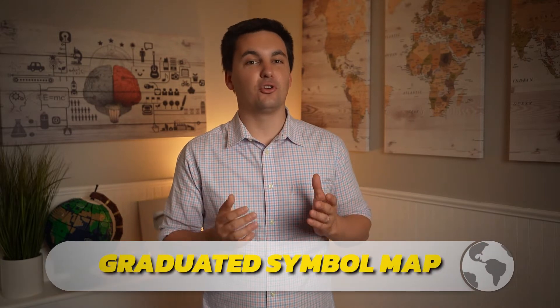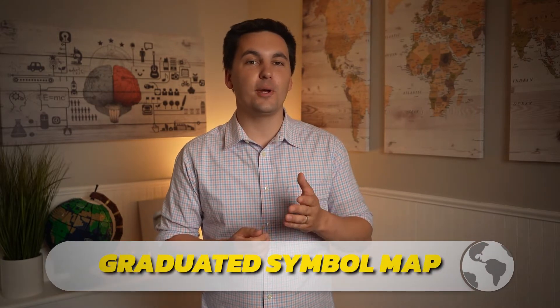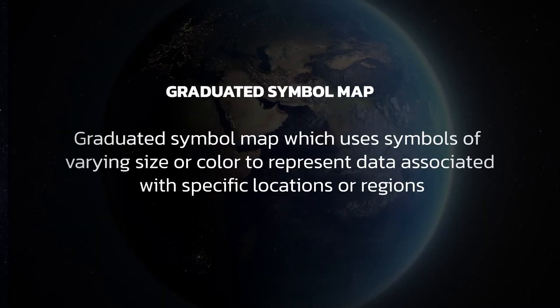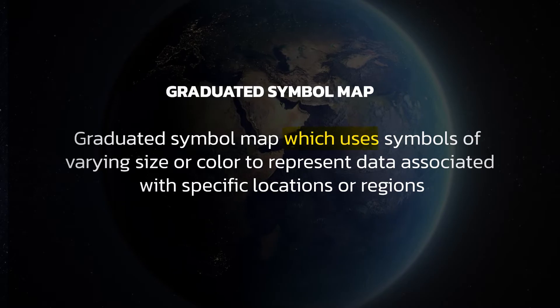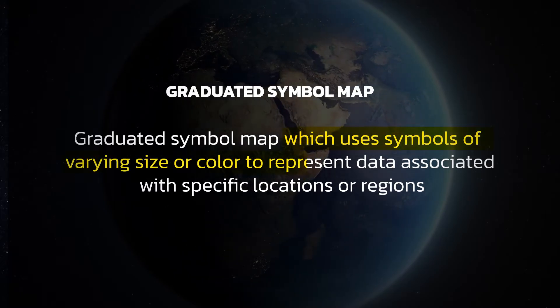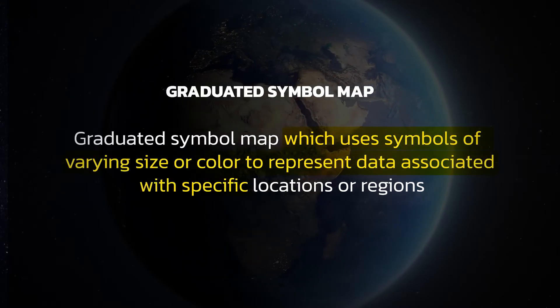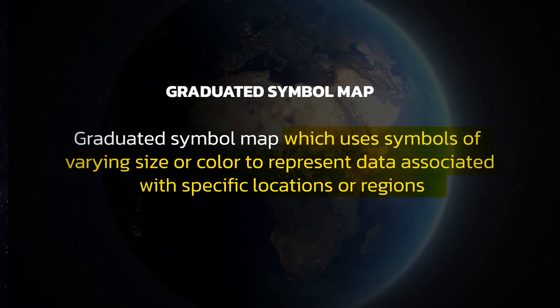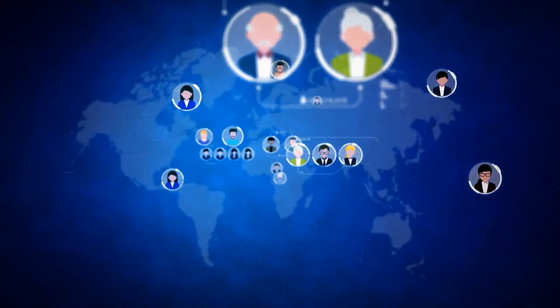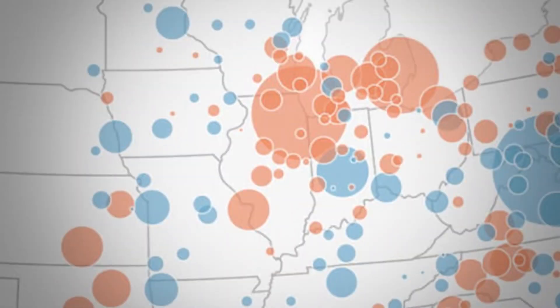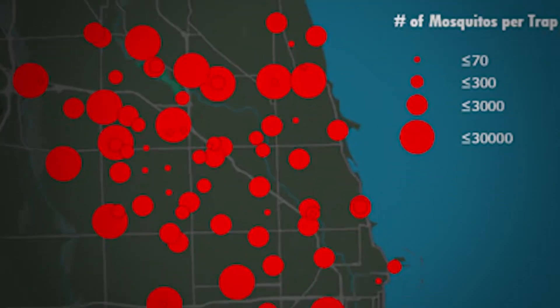Always read the legend before making any inferences about the data. Another type of map is a graduated symbol map, which uses symbols of varying size or color to represent data associated with specific locations or regions. These maps can be very visual, but sometimes can become confusing due to overlapping information.